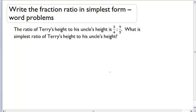So Terry's height to Uncle's height is in a ratio of 3 fourths to 9 over 5. What is the simplest ratio of their heights? The first thing I want to do is multiply this ratio by a common multiple.